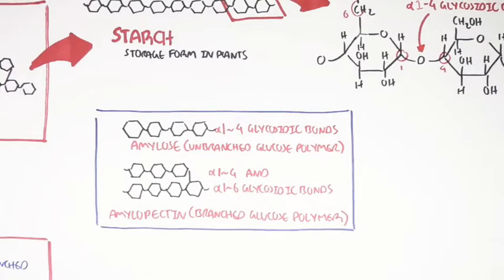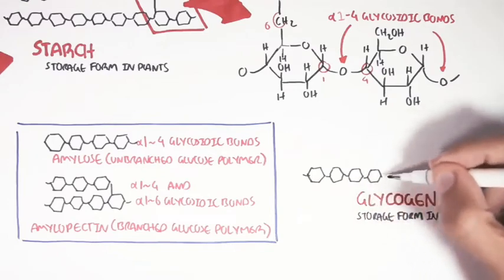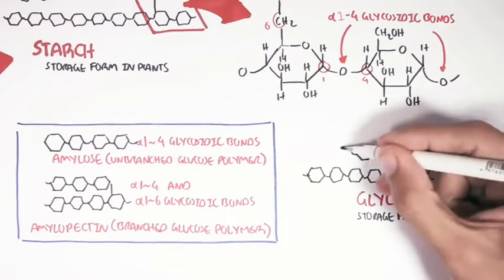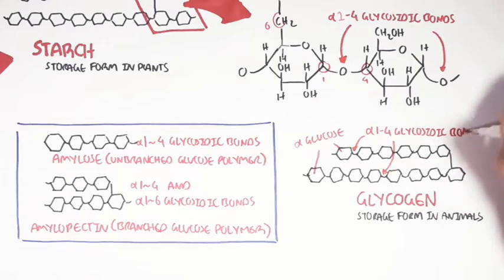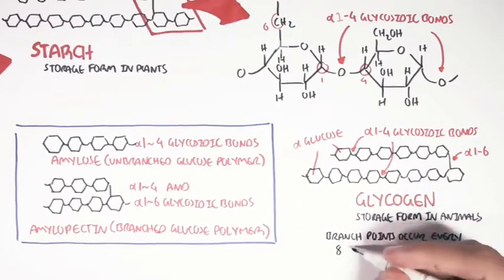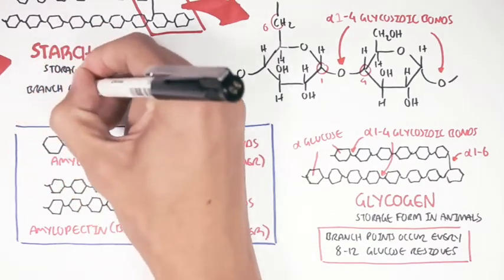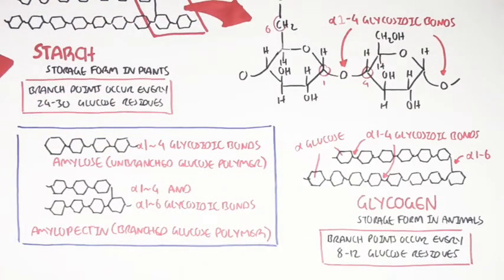Another good example of a polysaccharide is glycogen. Glycogen is a homopolysaccharide because it is made up of glucose, and it can also be branched or unbranched. Glycogen is a storage form of glucose in animals such as humans. Starch and glycogen are very similar in structure — both are made up of glucose and can be branched or unbranched, so both contain amylose and amylopectin forms. The key difference is that glycogen has branch points occurring every 8 to 12 glucose residues, while in starch they occur every 24 to 30, making branching more frequent in glycogen.